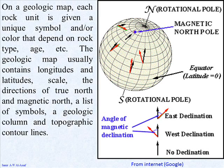A geologic map usually contains longitudes and latitudes, scale, the directions of the true north and magnetic north, a list of symbols, a geologic column, and topographic contour lines.